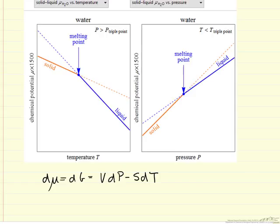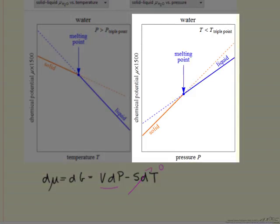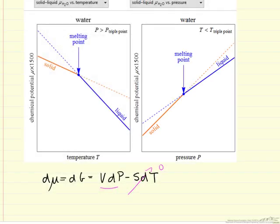For example, if temperature is constant, so this term is zero, then we expect Gibbs free energy to increase with pressure, and increase more for something that has a larger volume. So on the plot on the right, we see solid water, which has a larger volume per mole than liquid water, therefore its chemical potential is increasing more with pressure.